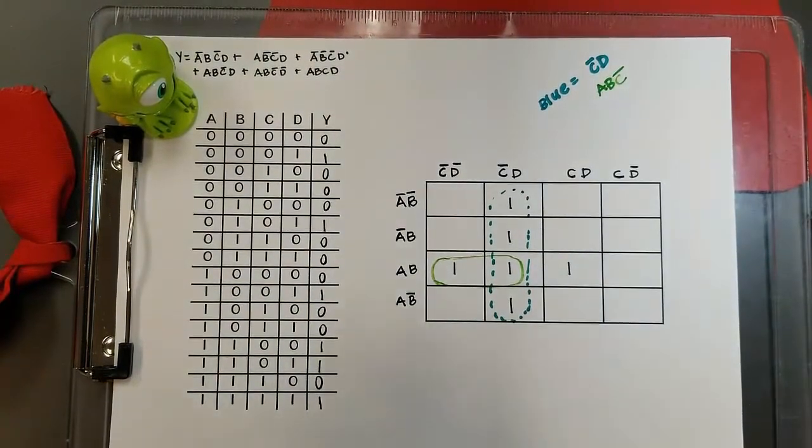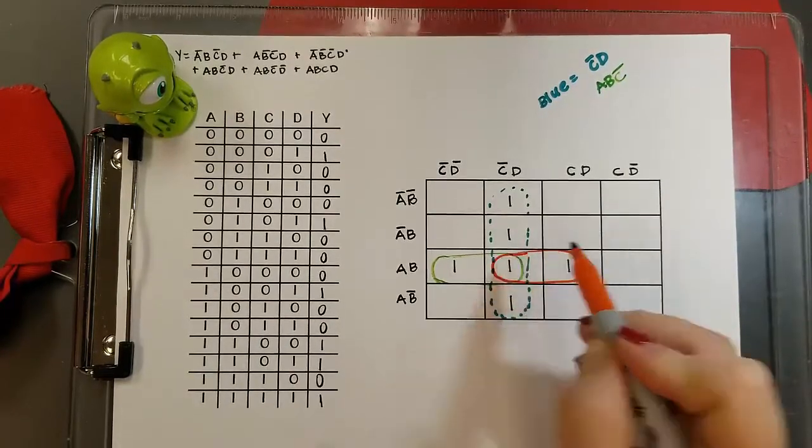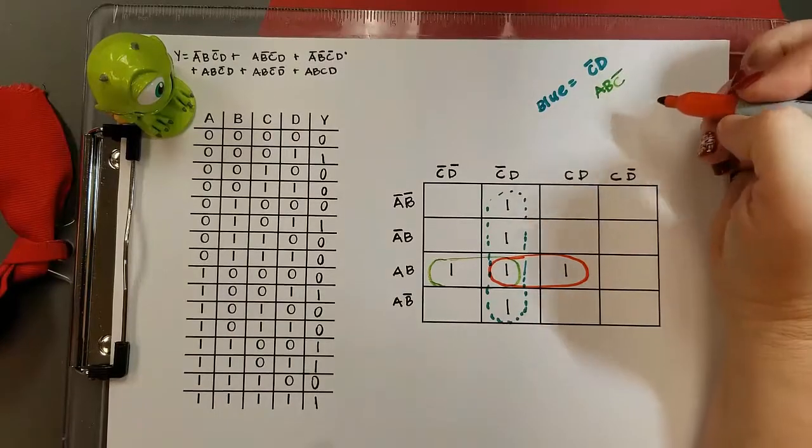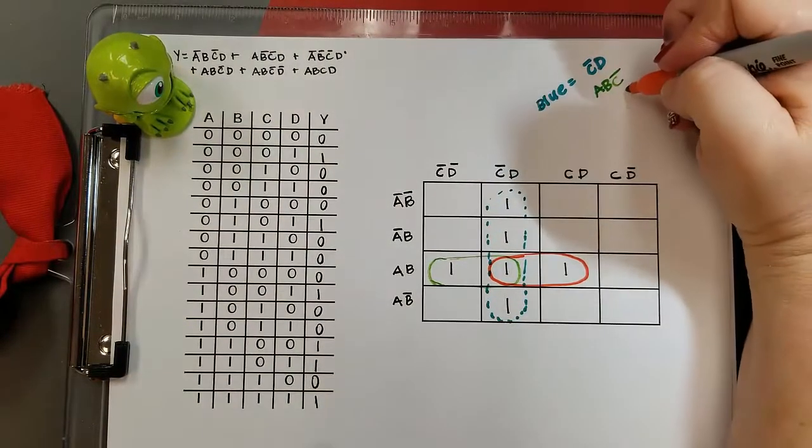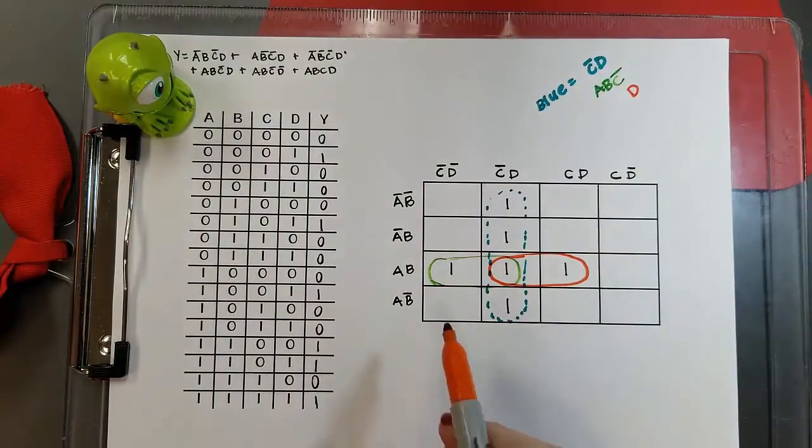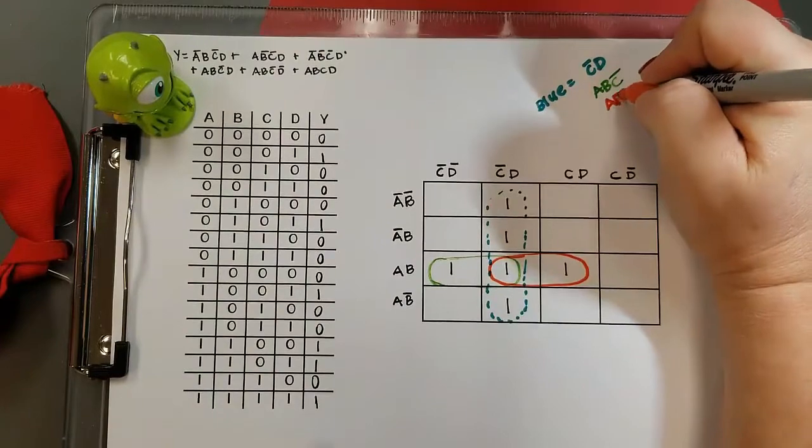Now I'm going to group the other one in a pair, because I don't want to leave it by itself when I can simplify it. So I'm going to look and see what terms. As I move there, C changed, so I'm going to keep the D and I still have A B. So those are my terms.